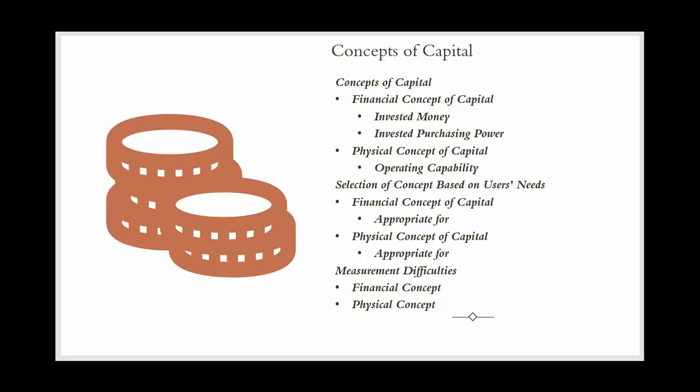The physical concept is suitable if users are primarily concerned with the entity's ability to maintain its production capacity and operational capabilities. Operational managers and production planners usually prefer this concept because it focuses on the entity's ability to continue producing goods and services efficiently. For example, stakeholders of J.K.L. Manufacturing, such as operational managers, are primarily concerned with maintaining the company's ability to produce goods efficiently. J.K.L. Manufacturing adopts the physical concept of capital, focusing on maintaining its machinery and production facilities to ensure continuous and efficient production.